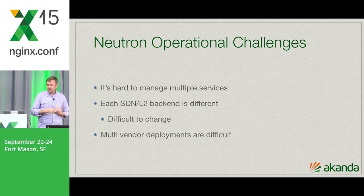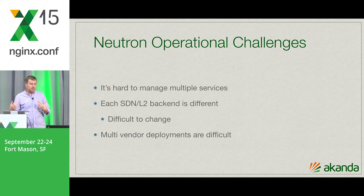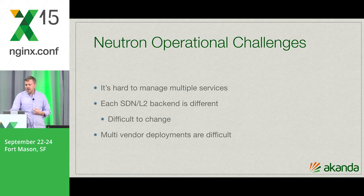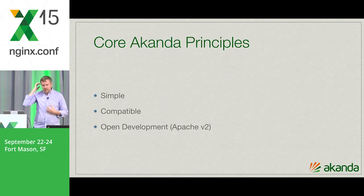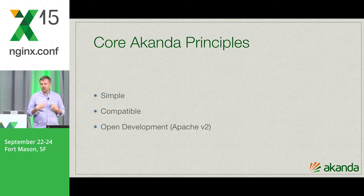Another problem is that in the SDN landscape, if you have an SDN controller and an L2 orchestration system, they're very hard to change — especially if you integrate all your layer three and above services into it. Over time some services get better, some don't scale, some have different scaling curves and you want to switch them out. That was another reason for founding the Aconda project — to have that ability and to better enable multi-vendor deployments, whether that's two solutions from different vendors or two variants from the same vendor based on cost strategy.